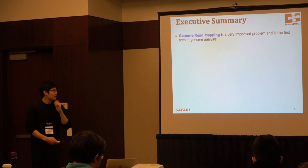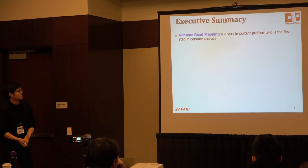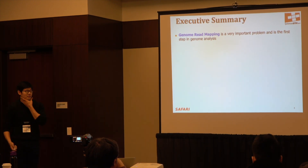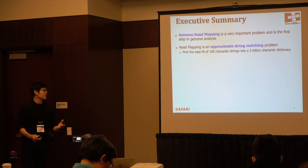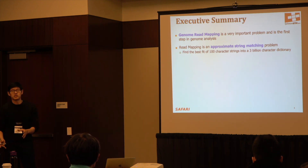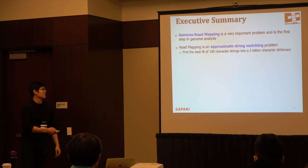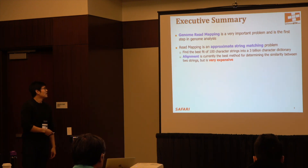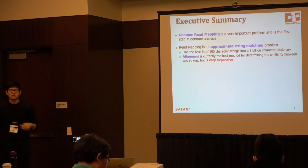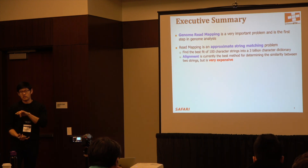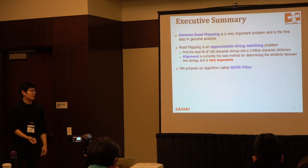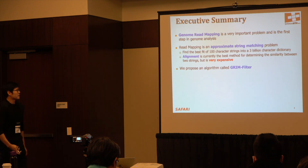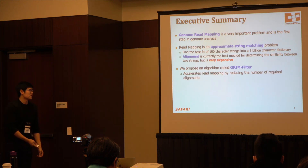Starting with the executive summary: genome readmapping is a very important problem and it's the first step in genome analysis. Readmapping is basically an approximate string matching problem, where we find the best fit of around 100-character strings into a three billion character dictionary for the human case. Currently, alignment is the best method for determining whether similarity exists between two strings, but it's very expensive. We propose an algorithm called GrimFilter, which accelerates readmapping by reducing the number of required alignments.